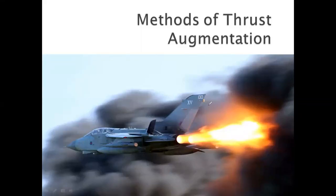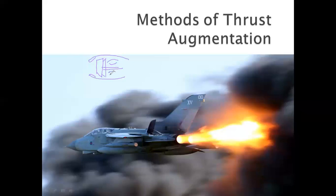Hello guys, welcome back. Today we are going to study the method of thrust augmentation. In the previous classes we have already understood how thrust is produced and how a jet engine operates. As a quick recap: in the engine there is first an inlet which increases pressure, then a compressor whose main work is to increase the pressure, after which there is a diffuser section followed by a combustion chamber where we supply fuel. The exhaust gases rotate the turbine, producing thrust.